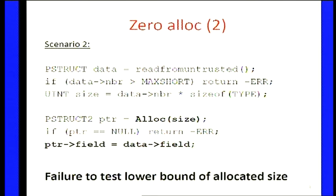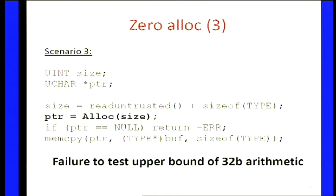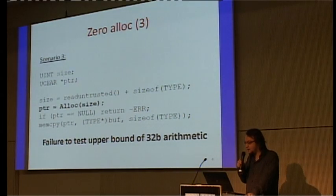Then you dereference the allocated pointer to an invalid location — you try to write to ptr->field. In the third example, you read the size from an untrusted location and add the size of a structure, say the size of a header. You allocate and check for null again. If you have an integer overflow, you can have a size that is small — potentially zero, maybe one or two — depending on the size type and the untrusted value. This triggers a heap overflow again.